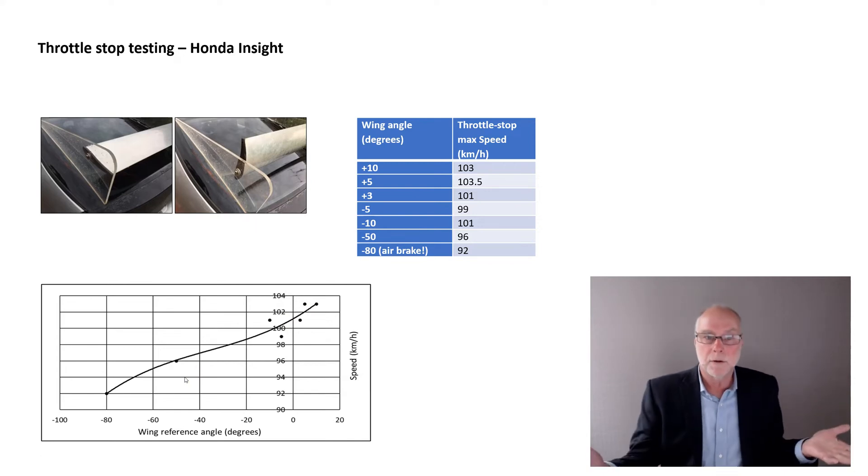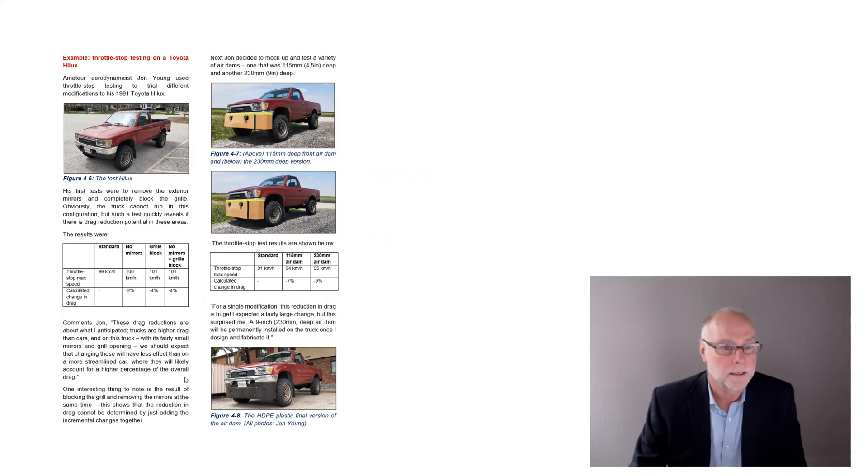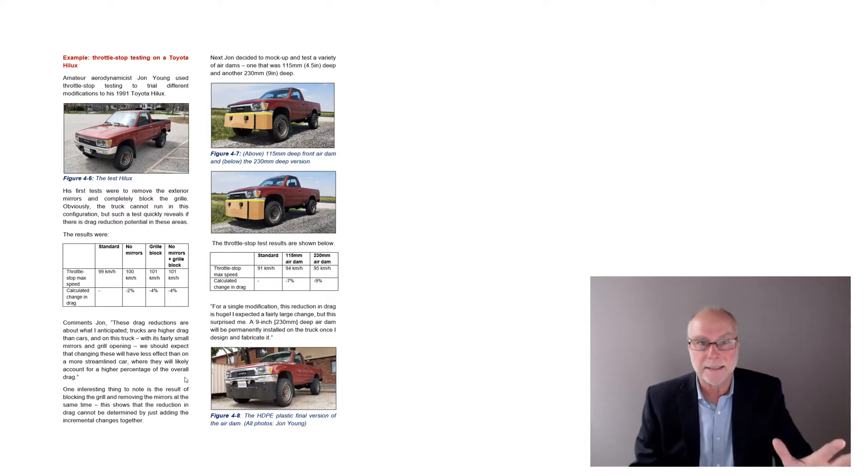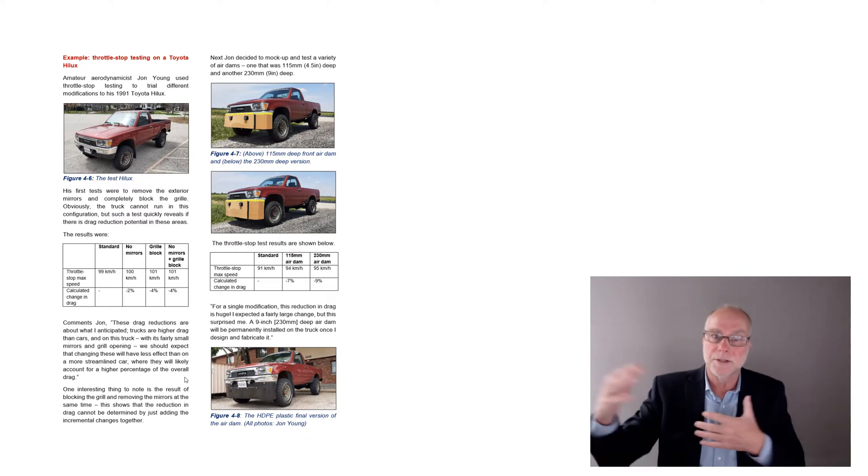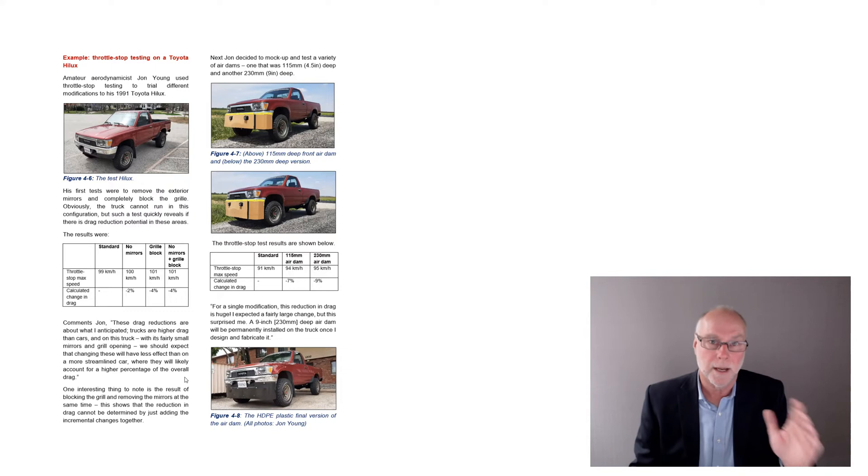Other examples in the book, because that Honda has air suspension where I can adjust the height. I did measurements at different heights. And again, it made sense. The higher the car was, the more drag, the lower the throttle stop limited top speed. And a completely different vehicle, my good friend John Young in the US tested his Hilux, throttle stop tested it with differing big front air dams, tested it with and without the mirrors, with a grill block. And again, the results that he was achieving made sense. And he was able to ascertain which of these two air dams gives the lowest drag by simply looking at the change in throttle stop limited top speed.